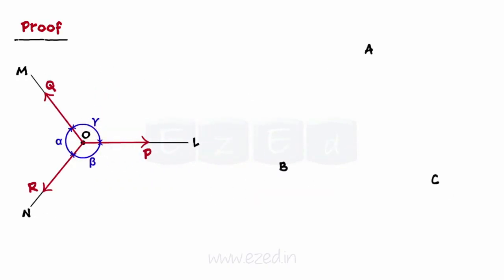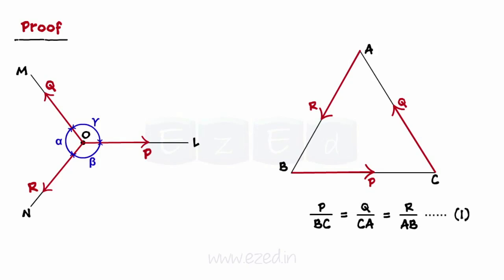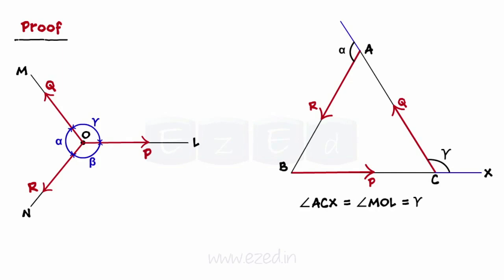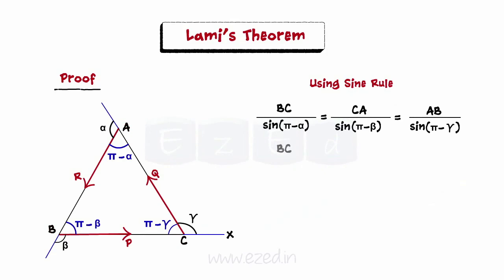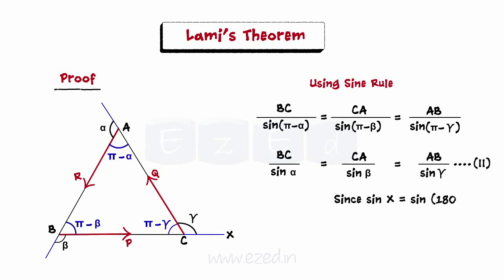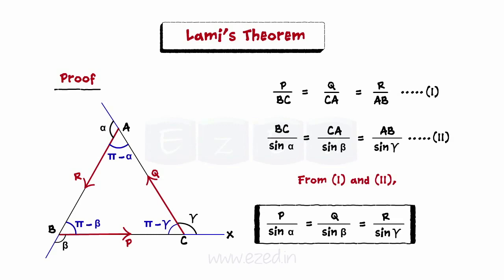Construct a triangle ABC whose sides are respectively parallel to OL, OM, ON. Then P upon BC equals Q upon CA, which is equal to R upon AB. Produce BC to X; now CX is parallel to OL and CA is parallel to OM. Using trigonometric relations, angle ACB is equal to pi minus gamma, and angles CAB and ABC are respectively equal to pi minus alpha and pi minus beta. Now using the sine rule on triangle ABC, we find that BC upon sine alpha equals CA upon sine beta, which equals AB upon sine gamma, since sine X equals sine(180 minus X). From these equations, we find that P upon sine alpha equals Q upon sine beta, which equals R upon sine gamma. Thus, we have proved Lamy's theorem.